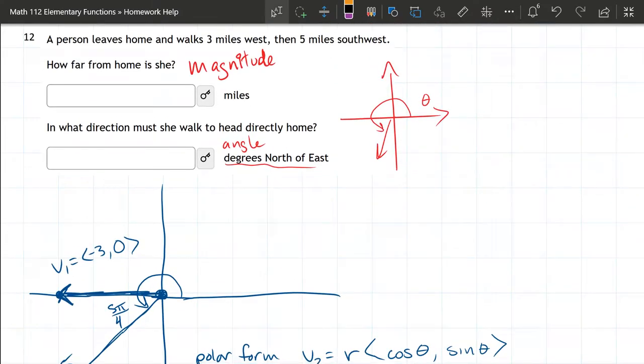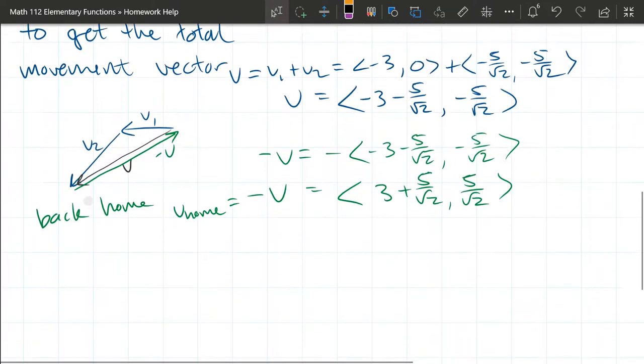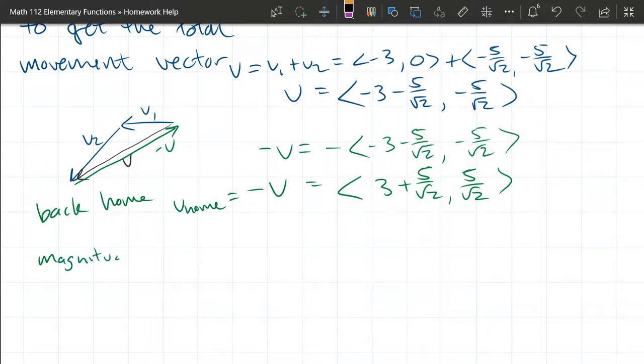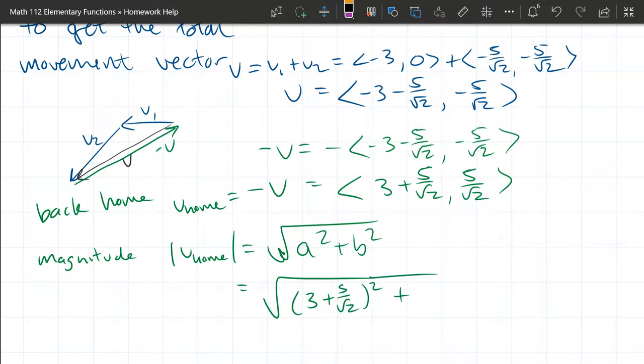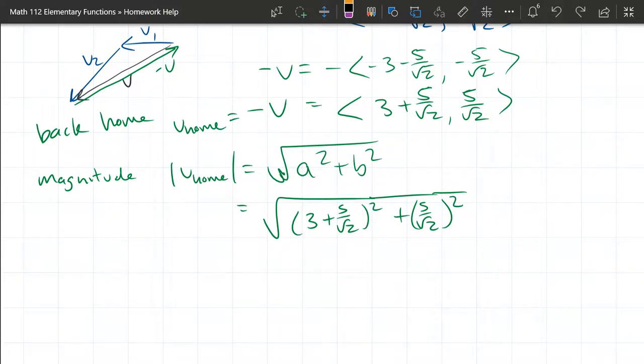This is the vector we need to answer these questions up top. The two pieces we need are the magnitude and the angle. Let's start with the magnitude, that's going to be easier to compute. That's |V_home|, and that's going to be square root of a squared plus b squared. You can expand this out, just make sure you foil it if you do. This answer will probably be accepted, so I would just stick with this one right here.